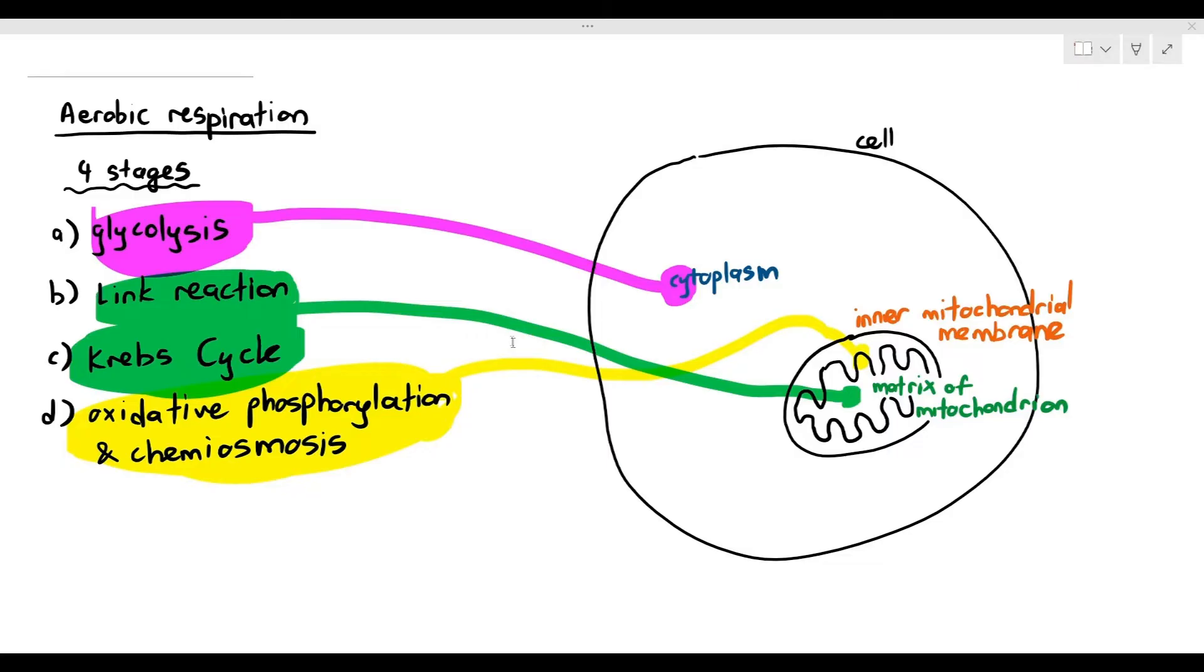So we are going to look at the structure of the mitochondrion and explain how these particular characteristics allow the mitochondrion to carry out the process quite efficiently.